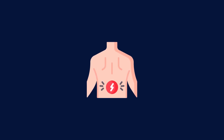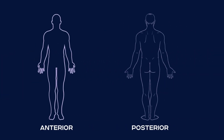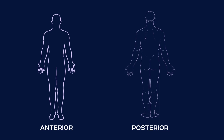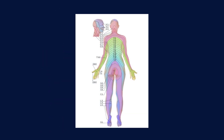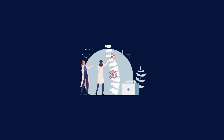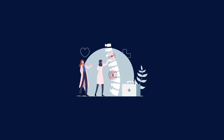The chart typically shows a human body as an anterior or posterior view with color-coded areas representing different myotomes. Each color corresponds to a particular spinal nerve responsible for controlling a specific group of muscles. This visual aid helps healthcare professionals to quickly identify the spinal nerve associated with muscle weakness or pain in a patient.